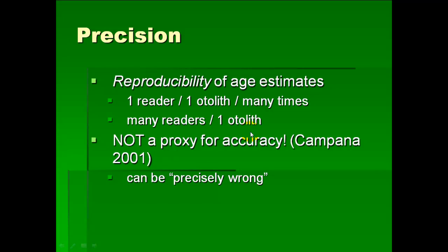Precision is not a proxy for accuracy. You can be precisely wrong. And so don't get lulled into a false sense of security if everyone in your lab is getting the same answer when you're aging fish. That means that your precision is good, that's a good thing, but that does not mean you're accurate. You have to keep that in the back of your mind.